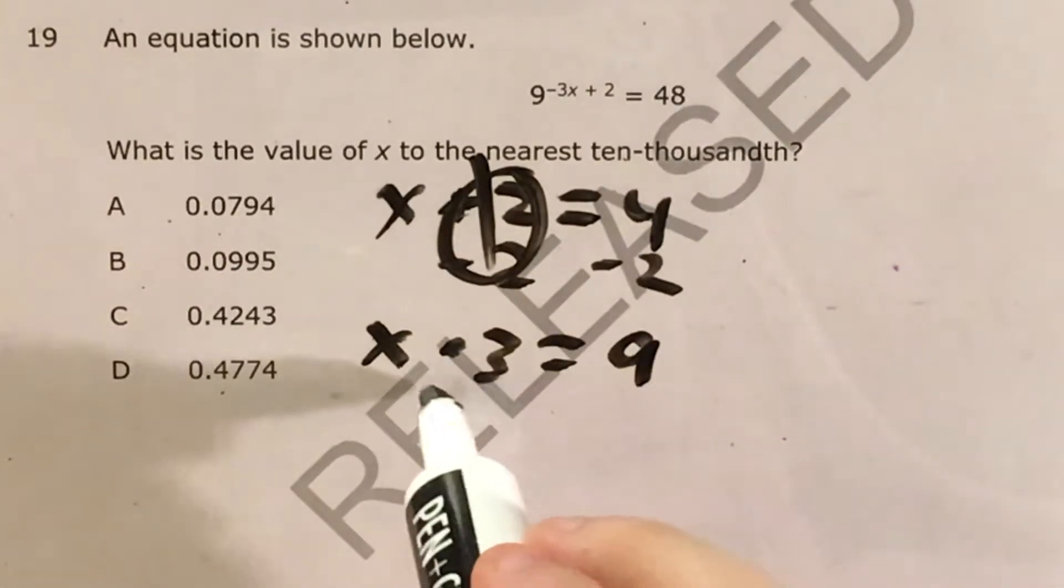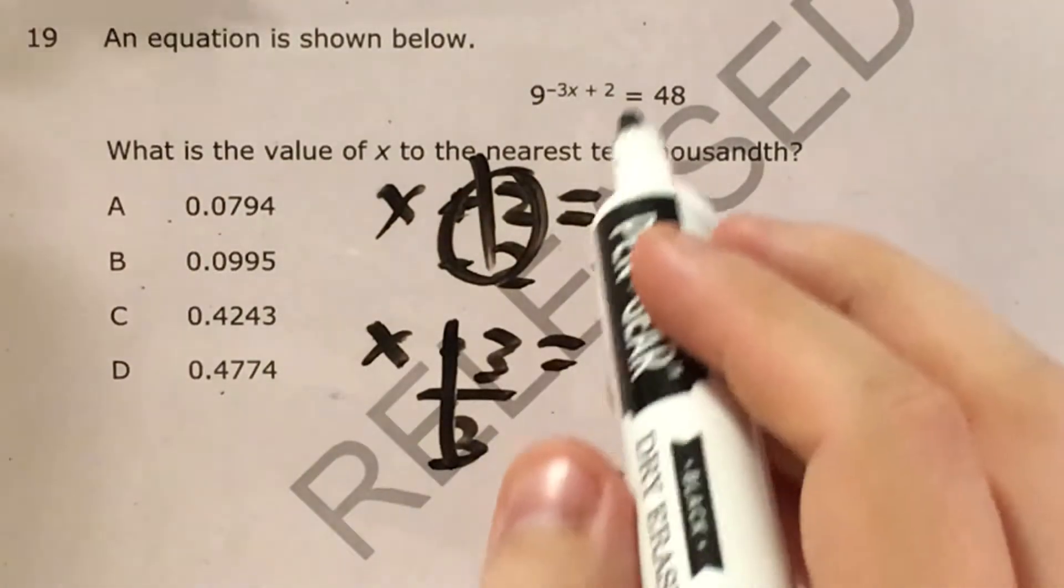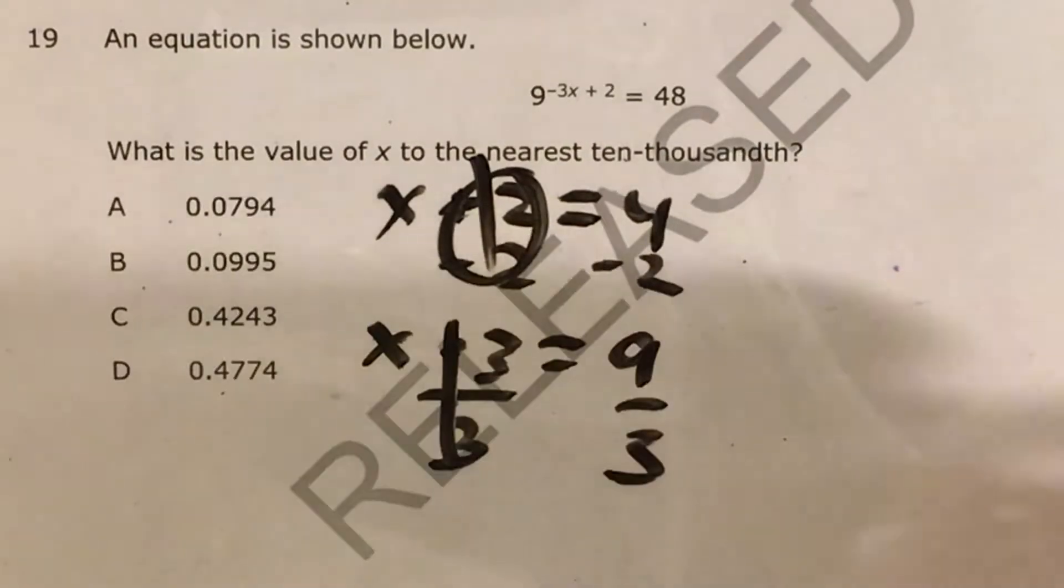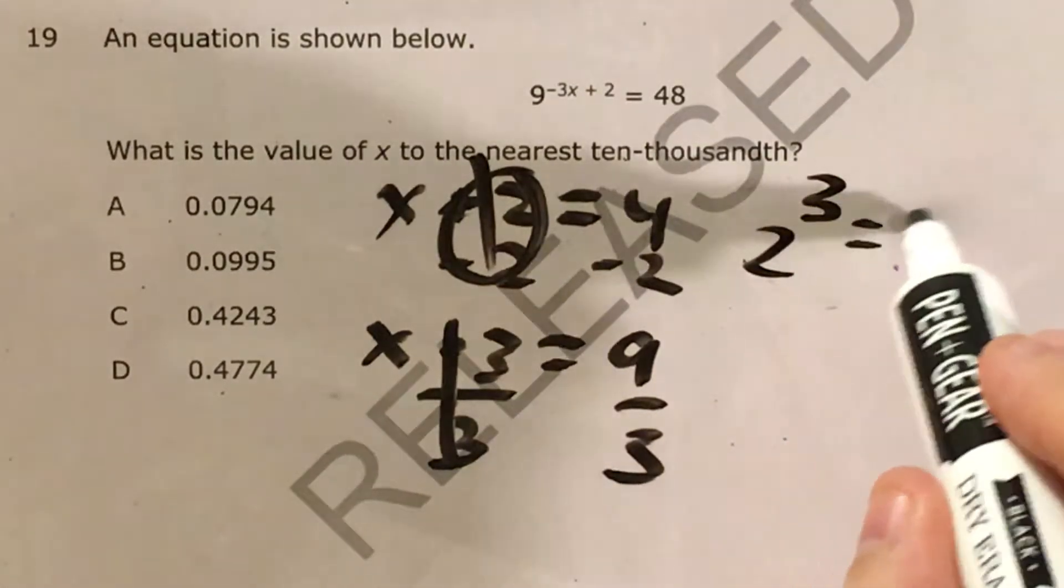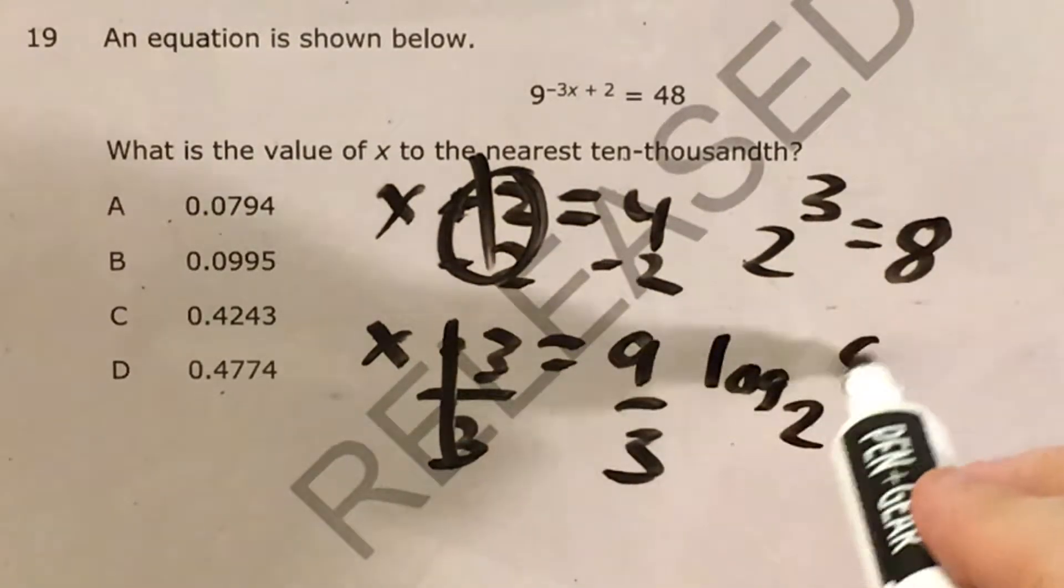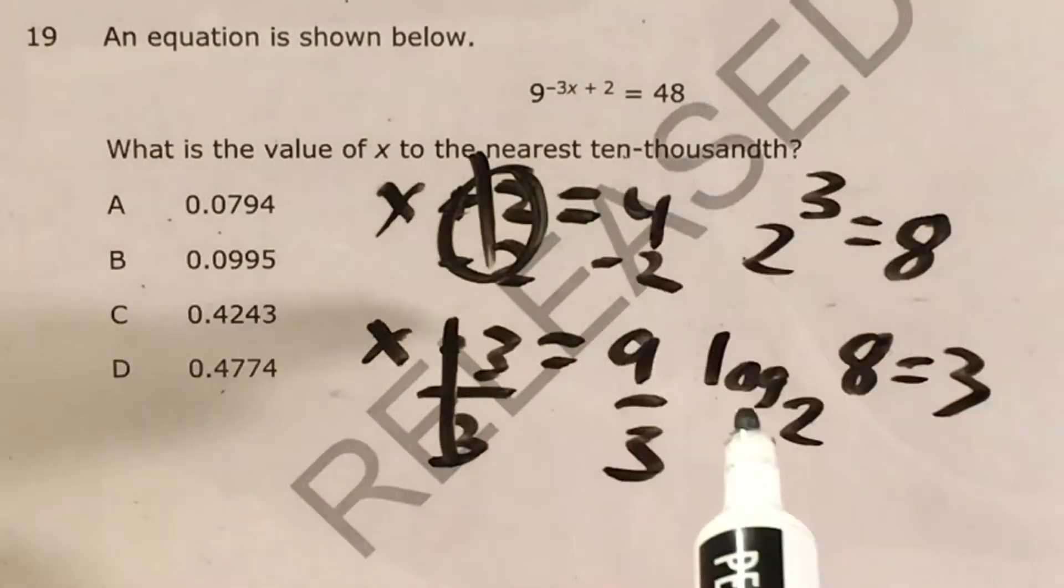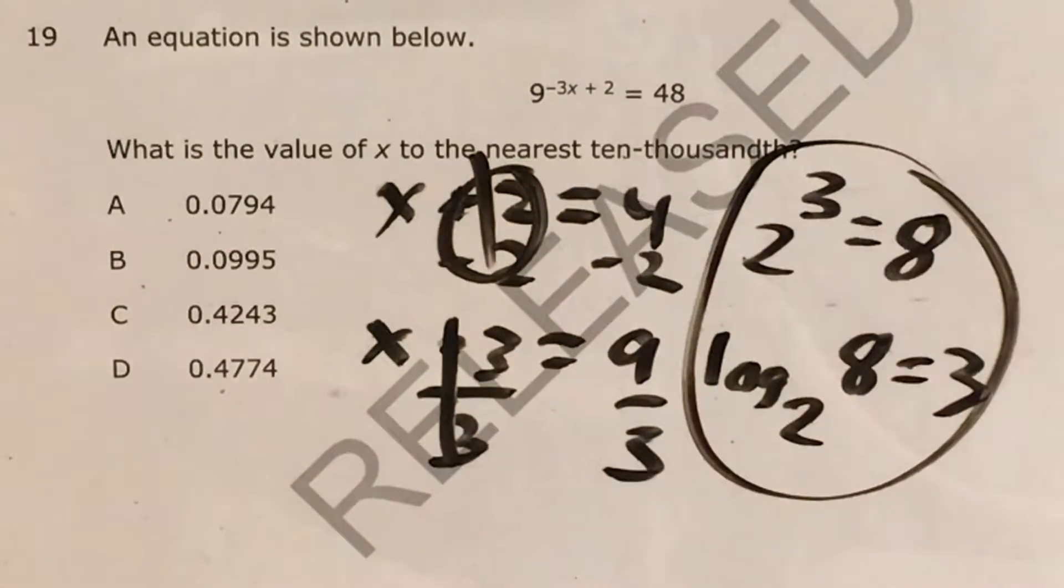In the same way, exponents and logarithms are mathematical opposites of each other. If I want to say that 2 to the third power equals 8, or if I want to say that log base 2 of 8 equals 3, these are two ways of saying the same idea. I need to use this idea that exponents and logarithms are opposites in the first step of my equation.